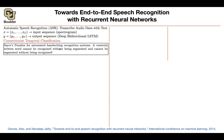What is the paradox? It says that a cursively written word cannot be recognized without being segmented, and it cannot be segmented without being recognized. So you first need to recognize it to be able to segment it, and to be able to segment it, you need to be able to recognize it. So there's a paradox going on there.